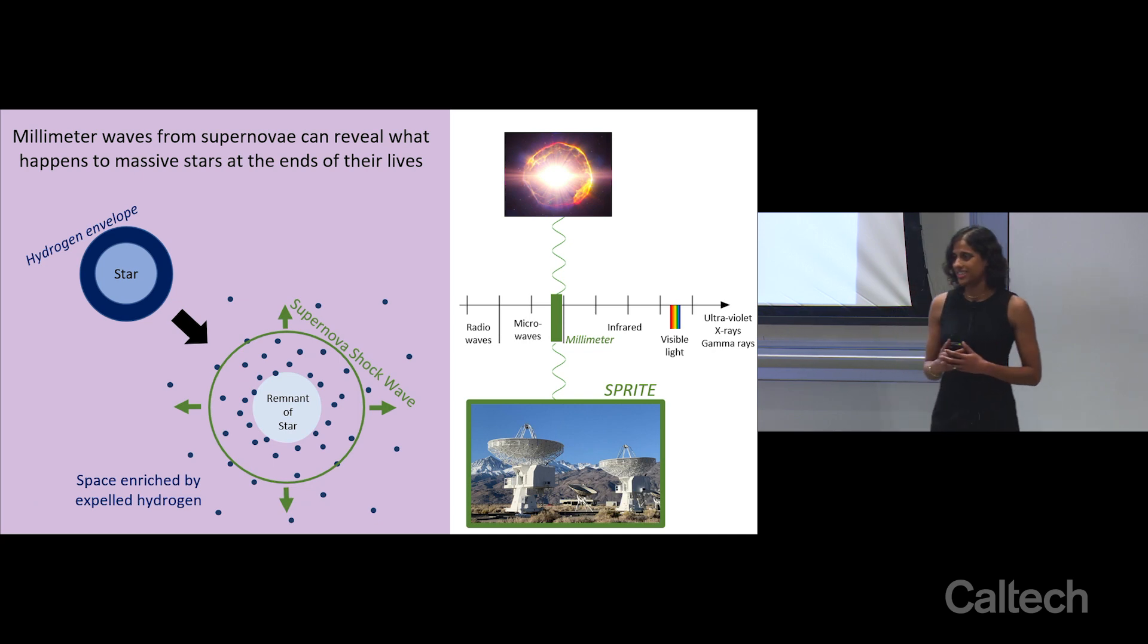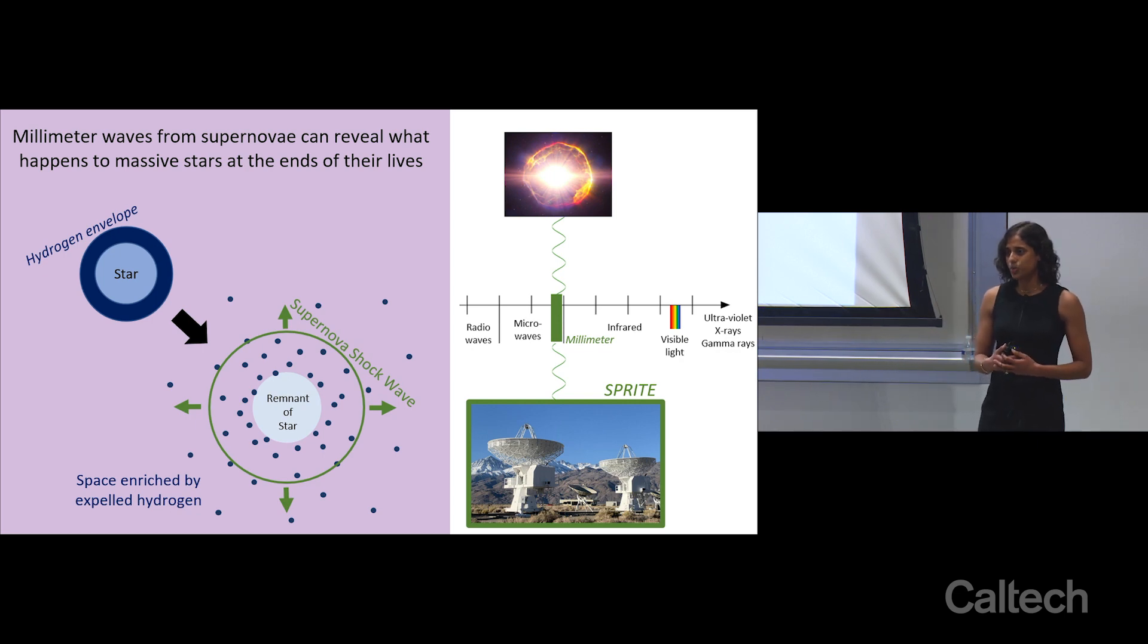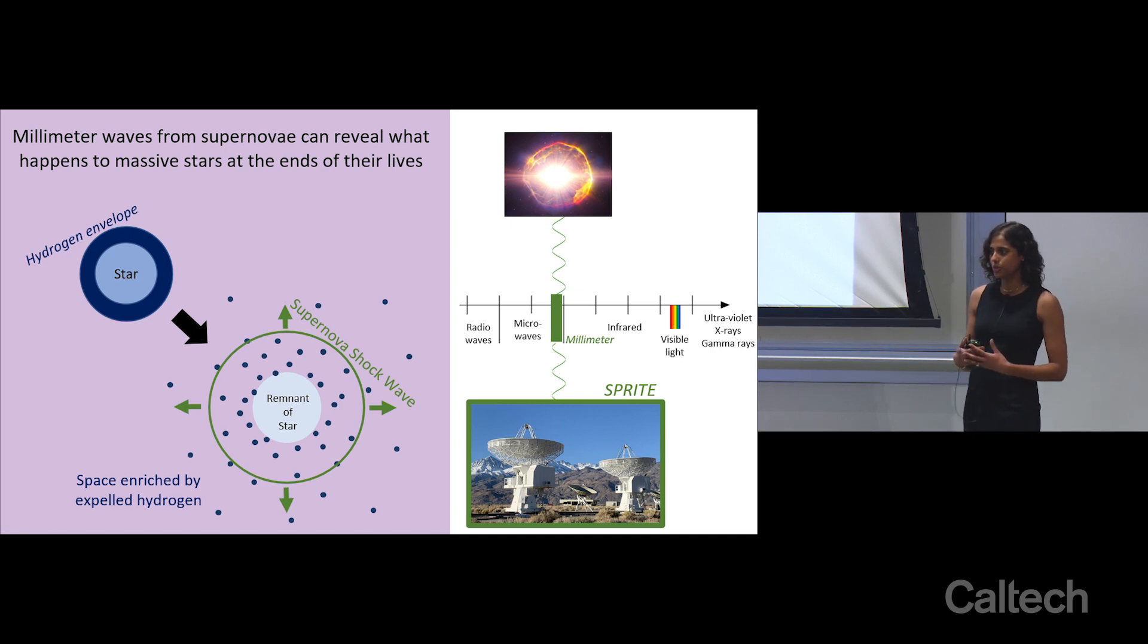So answering questions like these is why the focus of my thesis project has been to commission a new millimeter telescope called Sprite. Located just a few short hours north of Caltech, Sprite is one of the few millimeter telescopes in the world, and we have the unique power of controlling its entire observing program. By creating this resource dedicated to observing supernovae and similar phenomena, we have the ability to frequently and promptly revisit these cosmic crime scenes and build up a detailed record about how the millimeter brightness is changing with time.